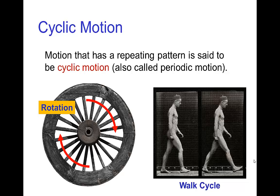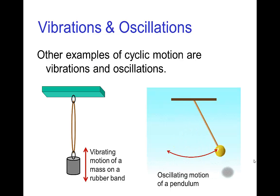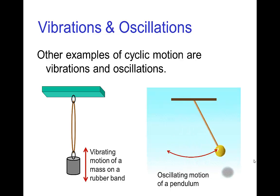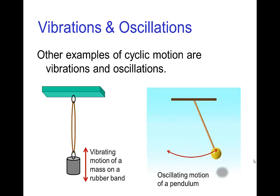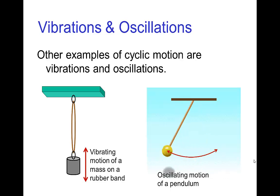There are lots of examples, such as a wheel that's turning — it completes one cycle when it completes an entire turn. Walking is also cyclic motion, repeating after two steps. Other examples include vibrations, a mass on a rubber band vibrating up and down, and something swinging back and forth like an oscillating pendulum. So vibrations and oscillations are other examples of cyclic periodic motion.